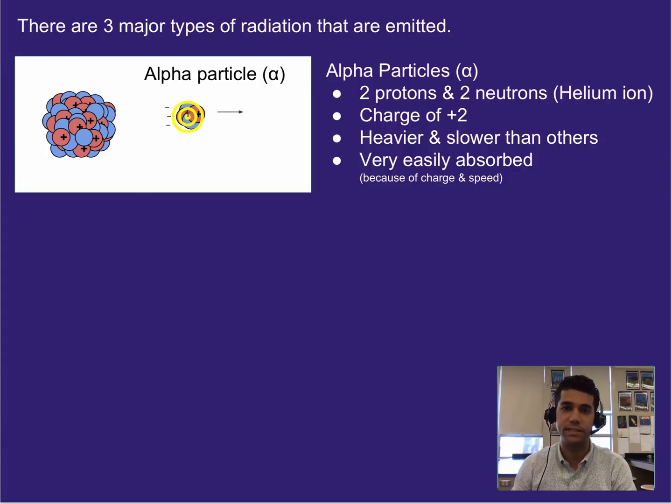Now because it doesn't have any electrons on it, it has a charge of positive two. It moves significantly slower than the other radiation we're going to talk about because it's so heavy in comparison. Because it moves kind of on the slow side comparatively, and because it has a charge of positive two, so fairly high charge in that sense, it's very easily absorbed. And we'll talk more about how far it can go in air a little bit later.